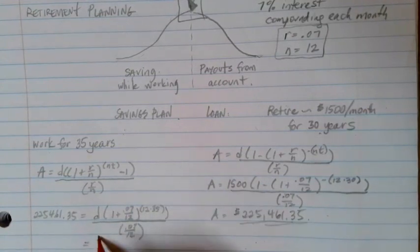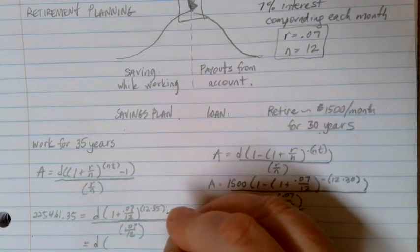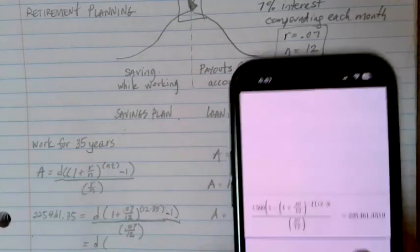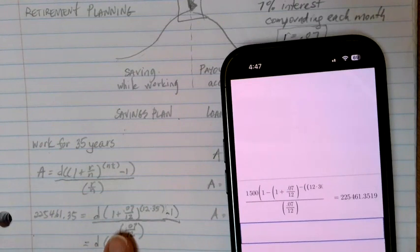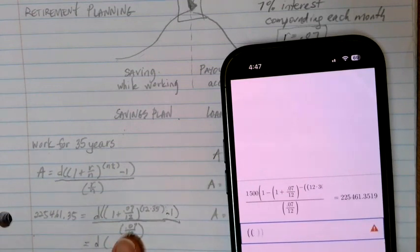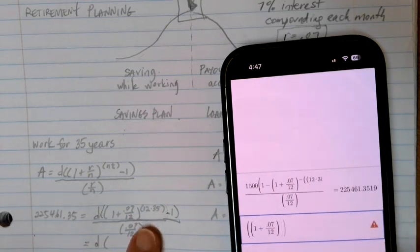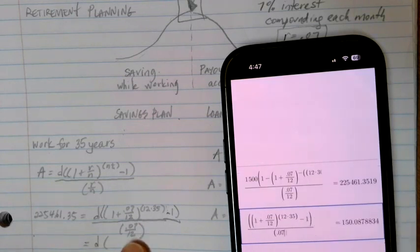All right, I want to solve for D. There's a whole bunch of other stuff here on the same side of the equation. Oh, don't lose my minus 1 from the formula here at the end. There you go. And let's see what we get here. So we're going to do double parentheses. 1 plus 0.07 over 12. To the 12 times 35 power. Back to the main level, minus 1 and close the parentheses. Then we want to divide that whole thing by 0.07 over 12.